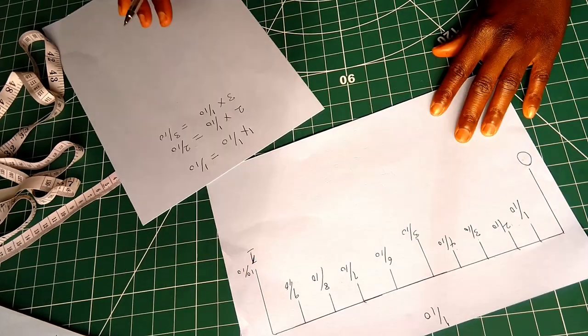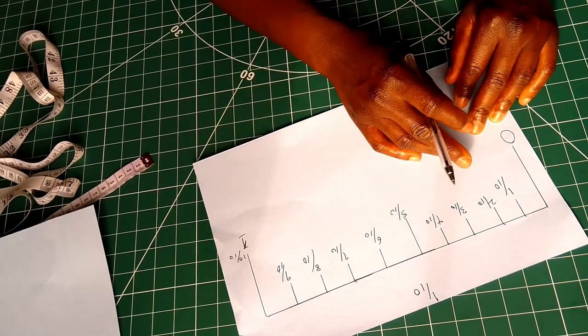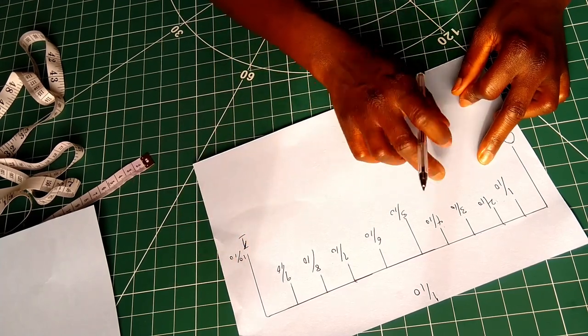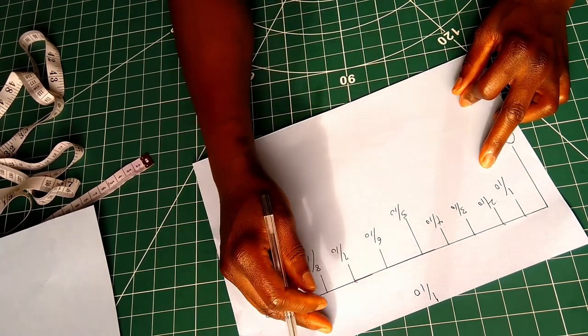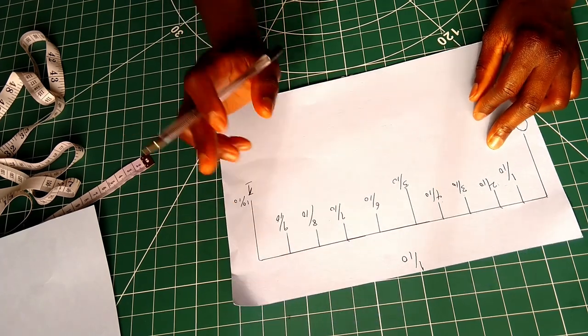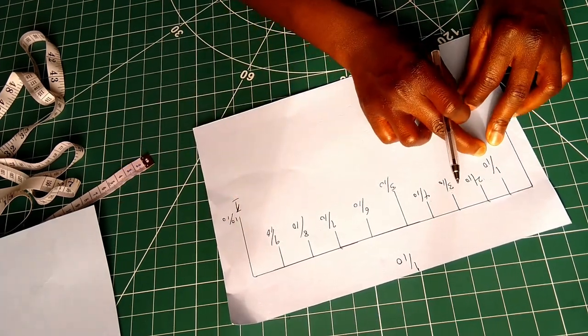10 over 10. So now let's convert these fractions into decimals, because mostly when we take our measurements, we get the decimals, not the fractions.